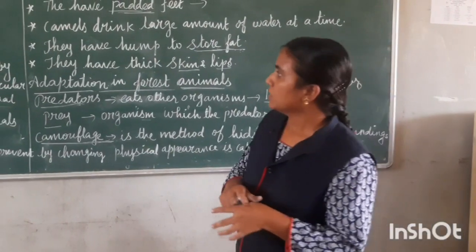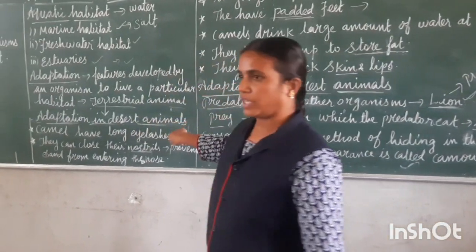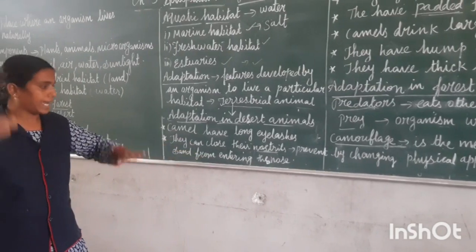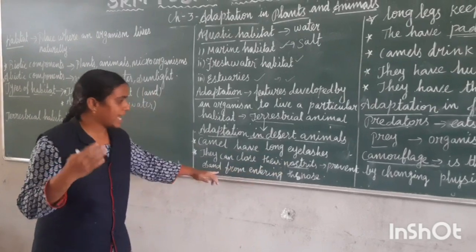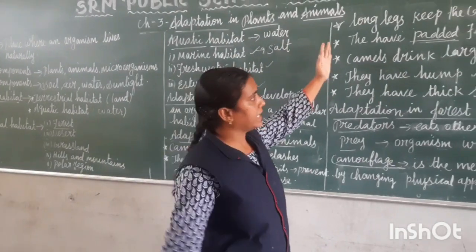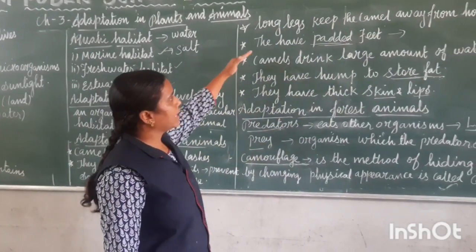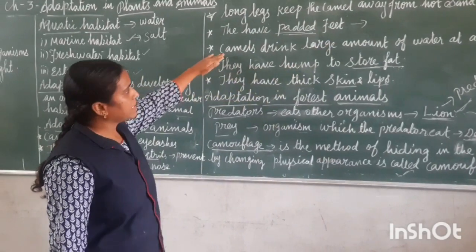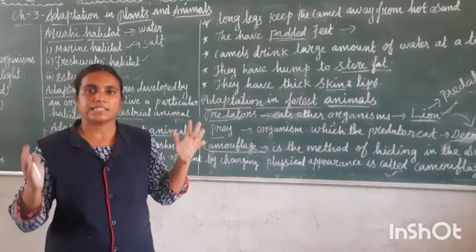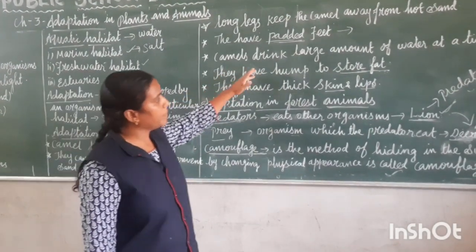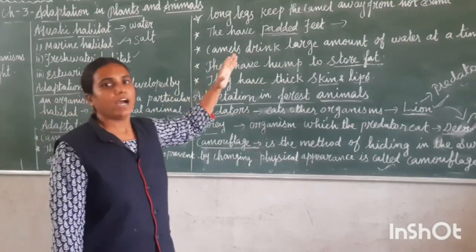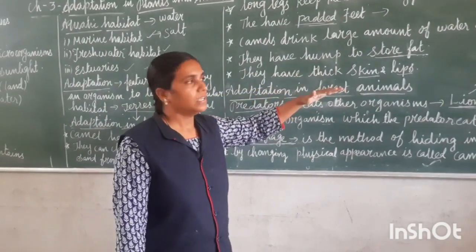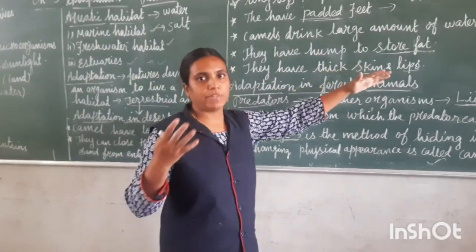Today we learned about adaptation in desert animals. Camel is called the ship of the desert. Camel has thick eyebrows and long eyelashes to prevent sand from entering their eyes. They can close their nostrils to prevent sand from entering the nose. Camels have long legs to stay away from hot sand, padded feet to walk easily on sand, and can drink 200 liters of water when thirsty.